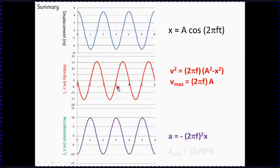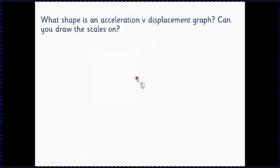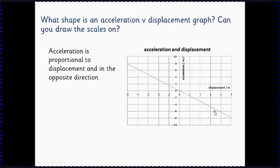So we can now relate velocity, acceleration, and displacement to time; acceleration to displacement; and velocity to displacement. All of that is summarized in these three graphs with the crucial equations. The graph of acceleration against displacement must be a straight line through the origin — a proportional relationship with a negative sign — because acceleration is proportional to displacement but in the opposite direction. That covers all the combinations we need of displacement, velocity, and acceleration.